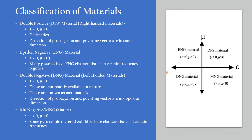Next one is double negative material. For this, permittivity and permeability will be negative. These are also known as left-handed materials because the direction of propagation and Poynting vectors are in opposite directions. These materials are not readily available in nature and they are classified as metamaterial structures.